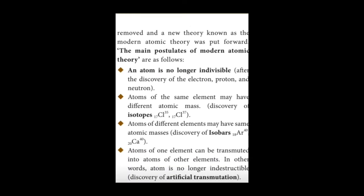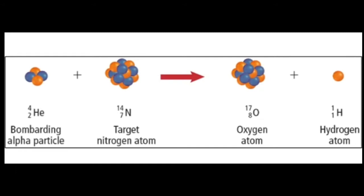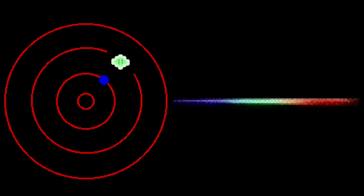The fourth postulate is atoms of one element can be transmuted into atoms of another element. The meaning of transmutation is the conversion of one element into another. If we transmute atoms of one element into atoms of another element, we will get a new element. For example, when a nitrogen atom is bombarded with an alpha particle, it gives an oxygen atom. Bombarding means that some particles are made to strike something with great speed.